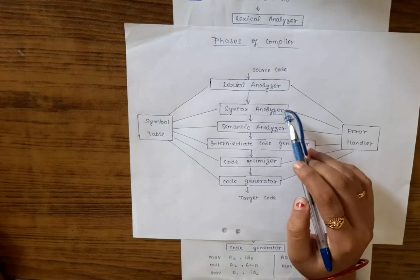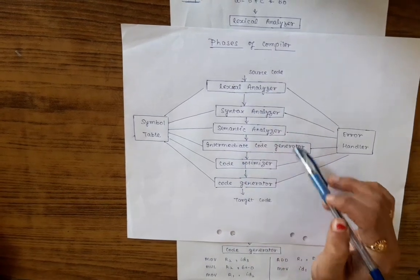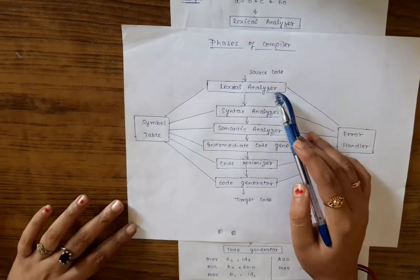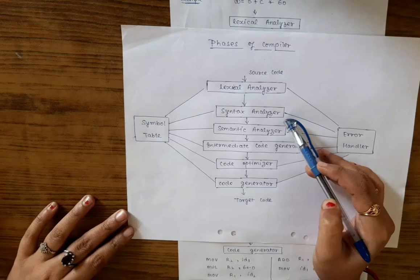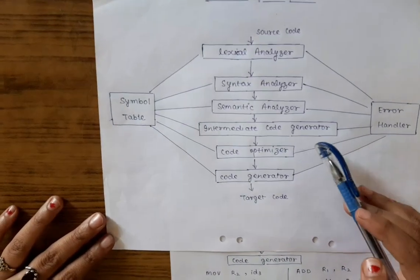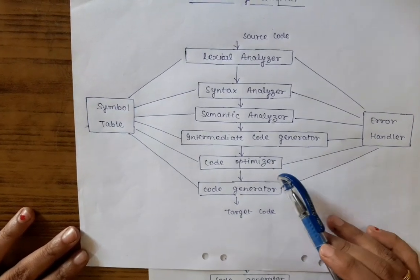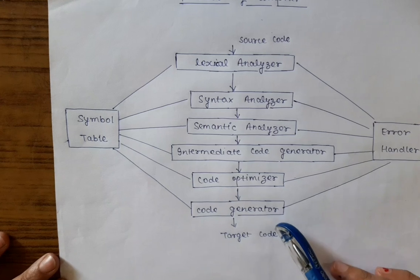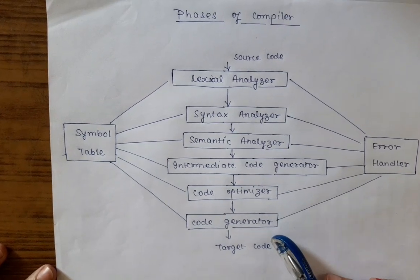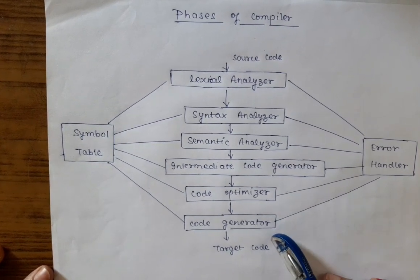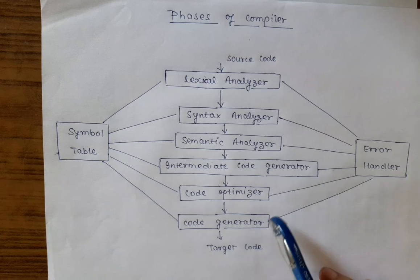Compilation process follows the sequence of various phases. They are lexical analyzer, syntax analyzer, semantic analyzer, intermediate code generator, code optimizer and the last code generator. So here you can see that there are six phases of compiler.